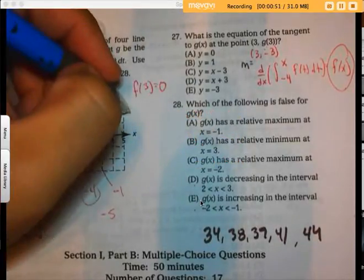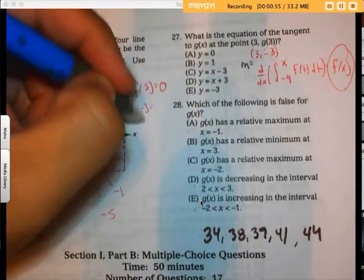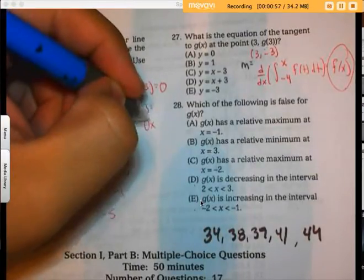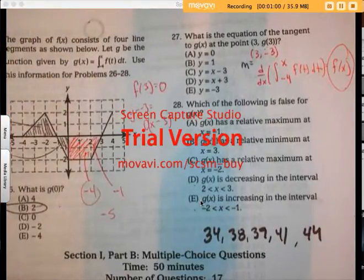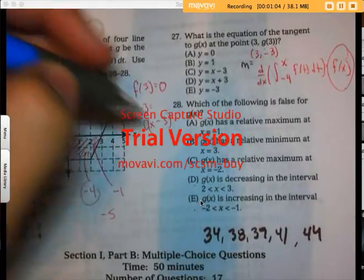So I'm going to use y minus negative 3 equals 0 times x minus 3, my point-slope formula. It looks like a bunch of it gets cancelled.